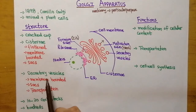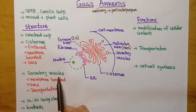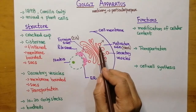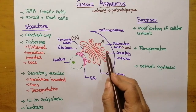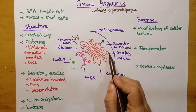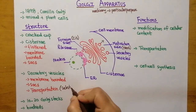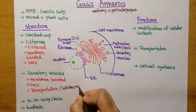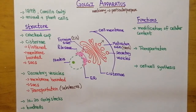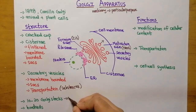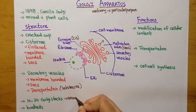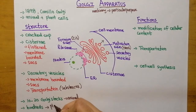Then come the secretory vesicles. Secretory vesicles are membrane-bounded sacs — here you can see these secretory vesicles — and they are used for the transportation of different substances. Regarding the number of Golgi apparatus, 10 to 20 Golgi stacks are present in animal cells, while hundreds of Golgi stacks are present in plant cells.